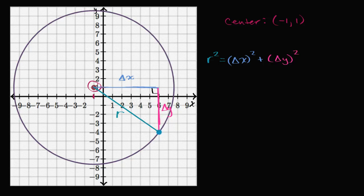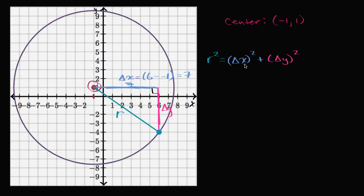What is our change in x? Our change in x is going to be equal to — as we go from the center to this point, our x goes from negative one to six. So six minus negative one is equal to seven. Our change in x is positive seven. If we viewed the other direction it would be negative seven, but once you square it, it becomes positive anyway.